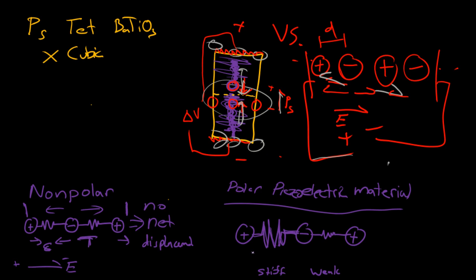Which one's stiff and which one's weak — but basically what happens when you apply an electric field across here, let's say the electric field is going that way. This atom and this spring want to go this way and that way. This positive nucleus wants to go that way and this negative atom wants to go this way. But this doesn't go under much tension or compression because this is such a stiff spring — pretty much the delta L is zero here.